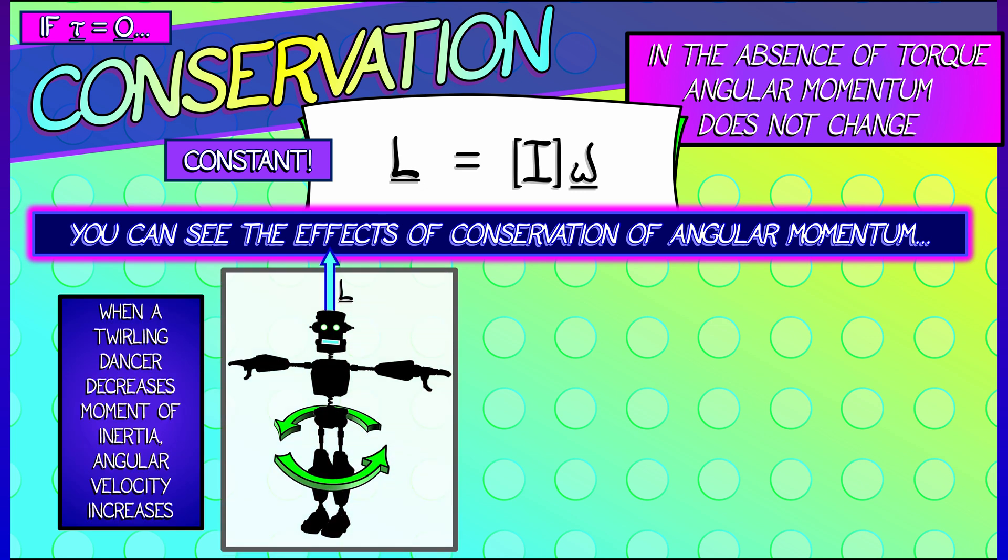and if the dancer pulls their arms in, that decreases the moment of inertia about that axis, and that means that the angular velocity has to increase to compensate.